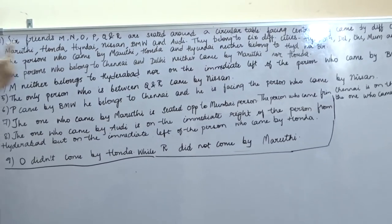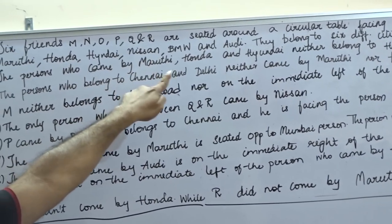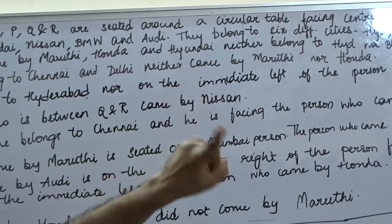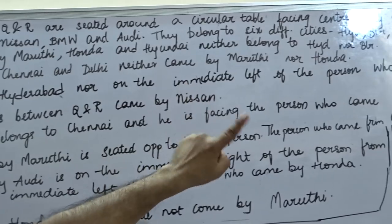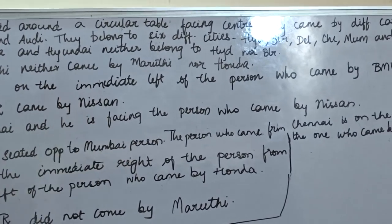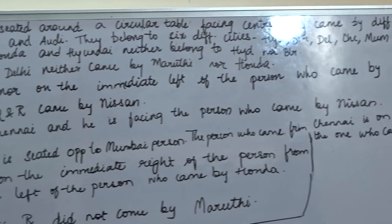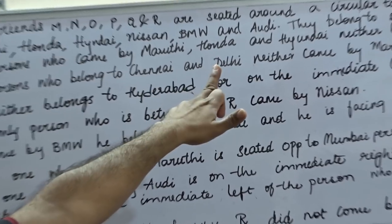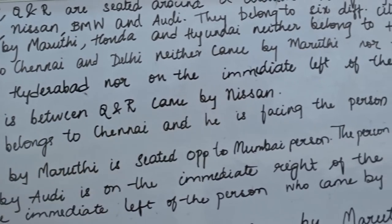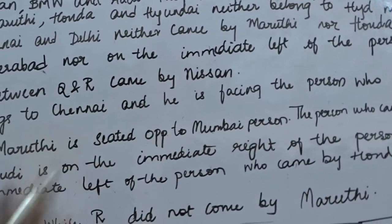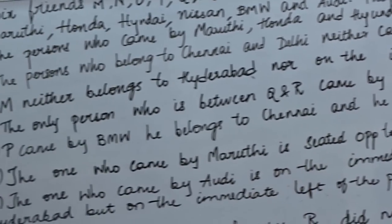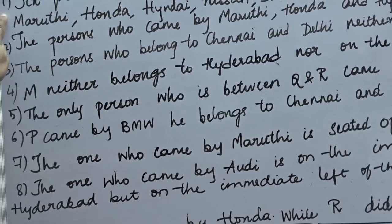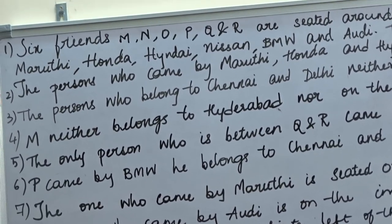Here it is given: six friends M, N, O, P, Q and R are seated around a circular table facing the centre. All are facing the centre — it is not given that some are facing inside and some outside. They came by different cars: Maruti, Honda, Hyundai, Nissan, BMW and Audi. They belong to six different cities: Hyderabad, Bangalore, Delhi, Chennai, Mumbai and Kolkata. They have given eight clues total after this base information.